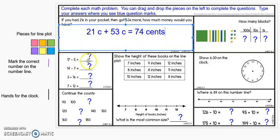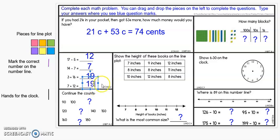Now we're going to come down to the next problem. 17 take away 5, that's 12. 14 take away 7 is 7. 3 plus 16 is 19, and 7 plus 12 is also 19.